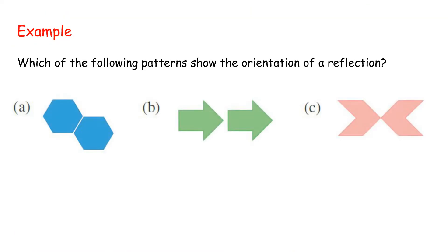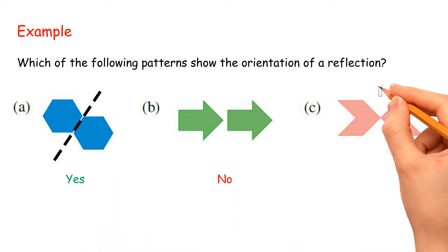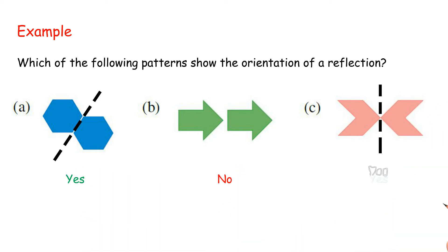Example: Which of the following patterns show the orientation of a reflection? Solution: A. Yes. B. No. C. Yes.